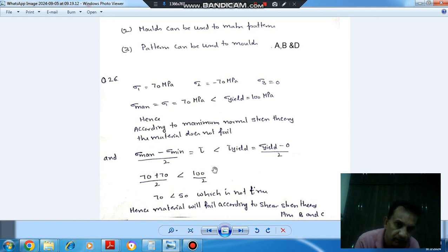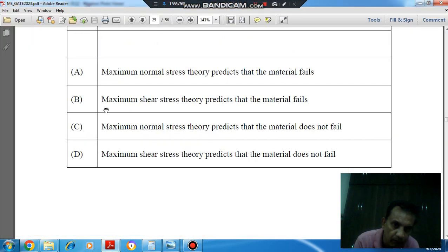So answer is B and C. Option B, maximum shear stress theory predicts that the material will fail. That is correct. And maximum normal stress theory predicts that the material does not fail. So that is also correct. So the answer is B and C.